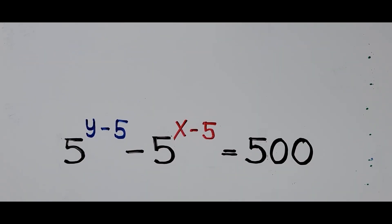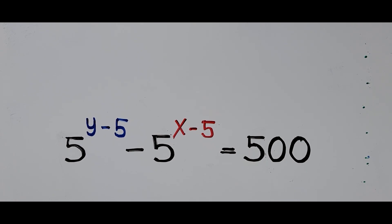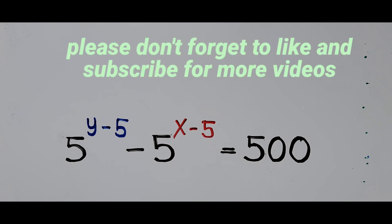Hello everyone, welcome to Guachiano Easy Math. This video is about solving the exponential equation: 5 to the power of (y minus 5) minus 5 to the power of (x minus 5) equals 500, and we're going to find the values of y and x. We'll be solving this equation in three ways, yielding three different sets of answers. The first two ways use the laws of exponents and logarithms, and the third way is the investigation method.